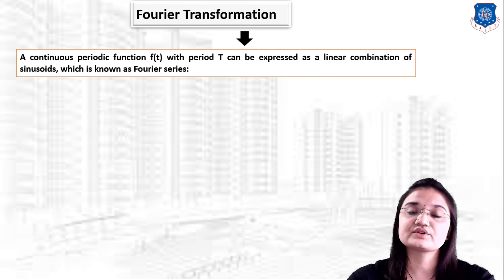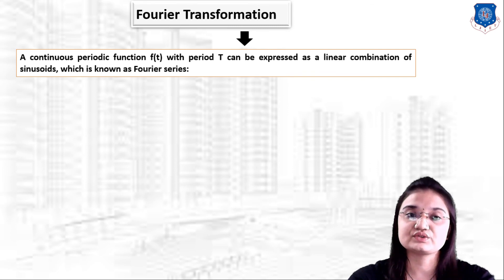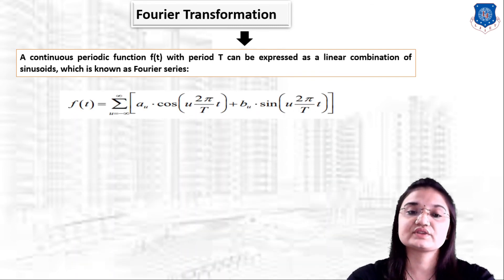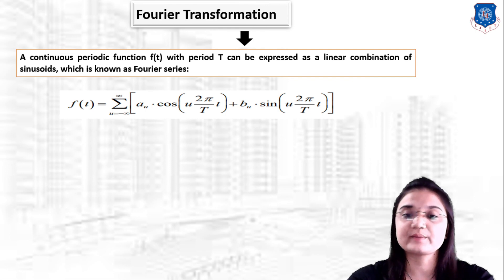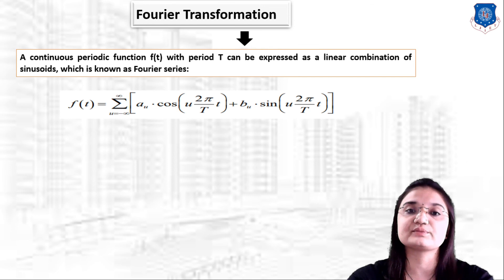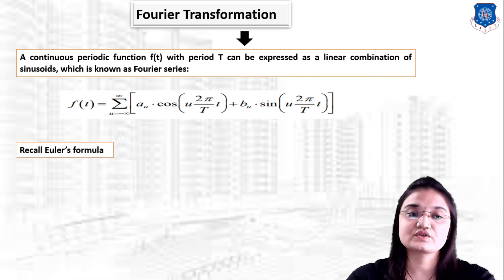A continuous periodic function f(t) with period T can be expressed as a linear combination of sines and cosines, known as a Fourier series. The equation is: f(t) = Σ (u = −∞ to +∞) [ aᵤ cos(2πu/T · t) + bᵤ sin(2πu/T · t) ]. With this equation we can easily convert the periodic function f(t) into sine and cosine component form.